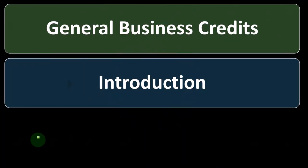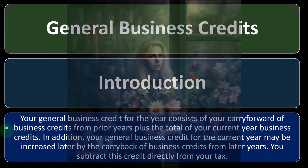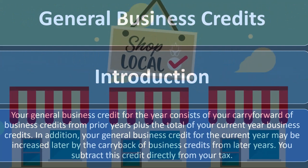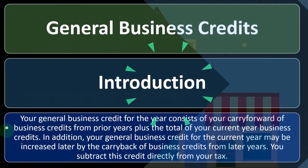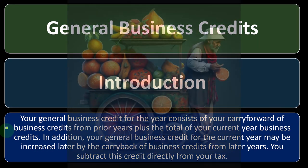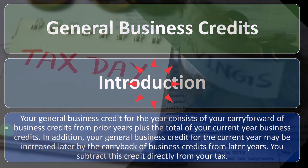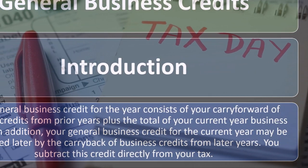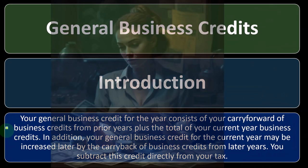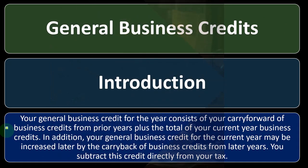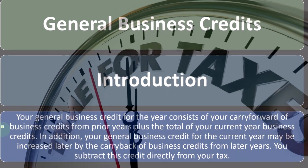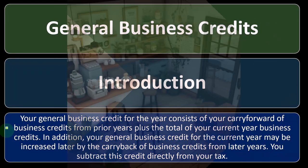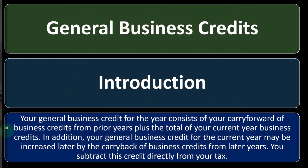Let's take a look at the general business credits. Your general business credit for the year consists of your carry forward of business credits from prior years plus the total of your current year business credits. If there are any carry forwards, I would recommend putting the information into the prior year software, mirroring what is on the prior year tax return so that you can roll forward the prior year information. That's particularly useful when we have carryovers because the software can better guide us with those carryovers.